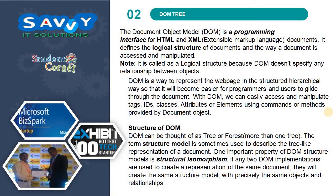The next topic is the DOM tree. DOM tree means Document Object Model. It is a programming interface for HTML and XML. XML means Extensible Markup Language. It defines the logical structure of documents and the way a document is accessed and manipulated. DOM is a way to represent the web page in a structured, hierarchical way, so that it becomes easier for programmers and users to navigate through the document. With DOM, we can easily access and manipulate tags, IDs, classes, attributes or elements using commands or methods provided by the document object.